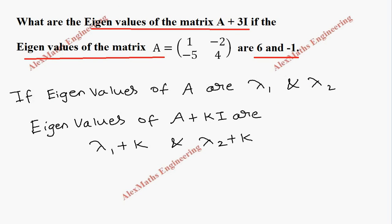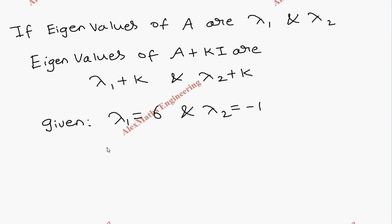Now, the values of λ₁ and λ₂ are given in the question as 6 and -1. So let's take λ₁ = 6 and λ₂ = -1. The value of k is 3 because we need A + 3I.